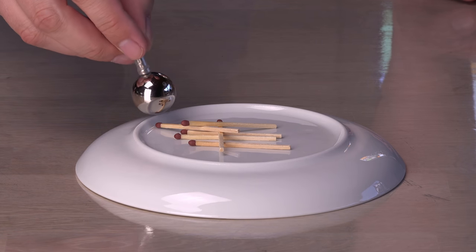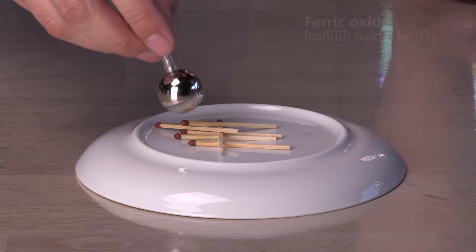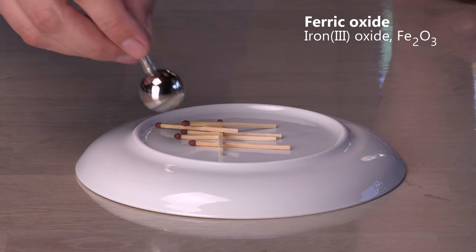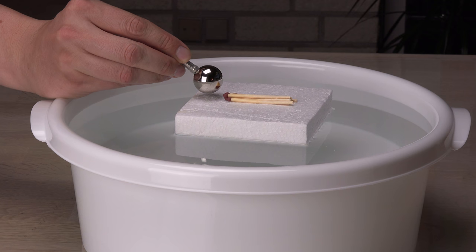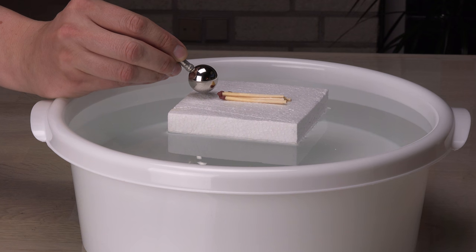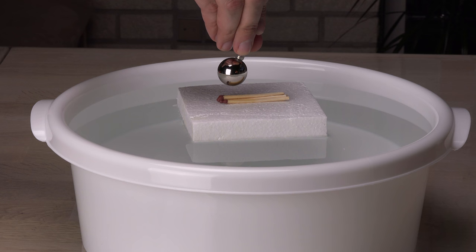First up is matches. These contain a tiny amount of iron as ferric oxide and impurity in the match head. Not enough iron to have them stick to a magnet, but on a sensitive water bath they are slightly drawn towards the magnet.